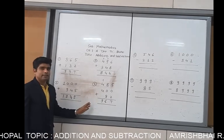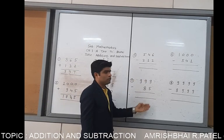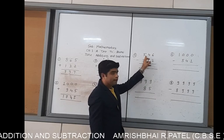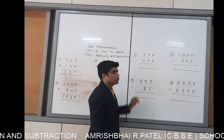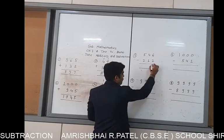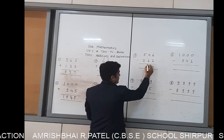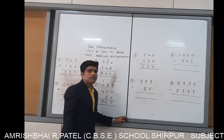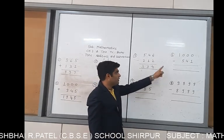This is also a simple example. Now the best example — we start from subtraction. You have to solve it one by one. First example: 546 subtract 212. First, 6 minus 2 is 4. 4 minus 1 is 3. 5 minus 2 is 3. Your answer is 334.